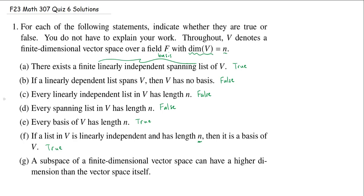Finally, a subspace of a finite dimensional vector space can have a higher dimension than the vector space itself. Of course, this is nonsense. We know if U is a subspace of V, then the dimension of U is always less than or equal to the dimension of V. We even know that the dimension of U equals the dimension of V if and only if U equals V.